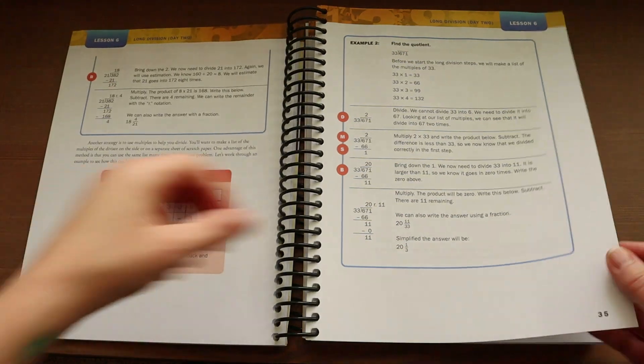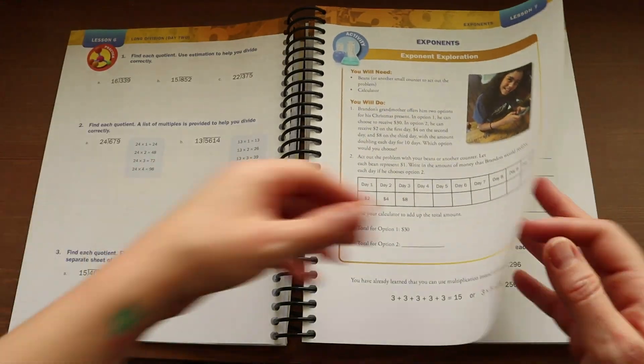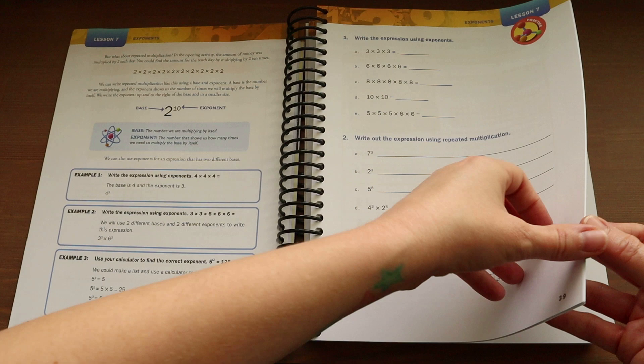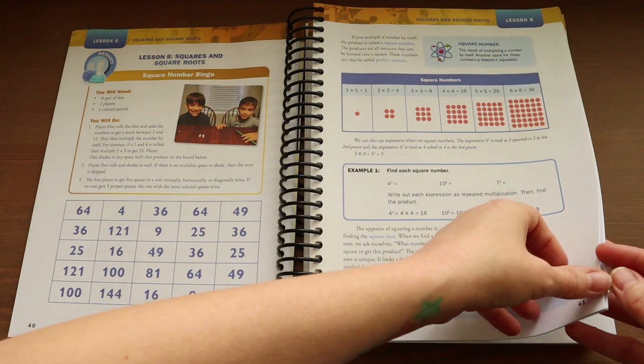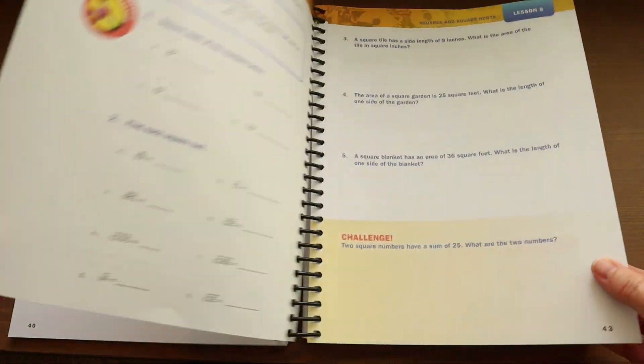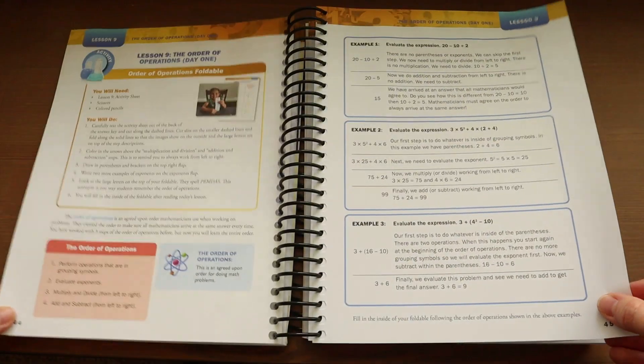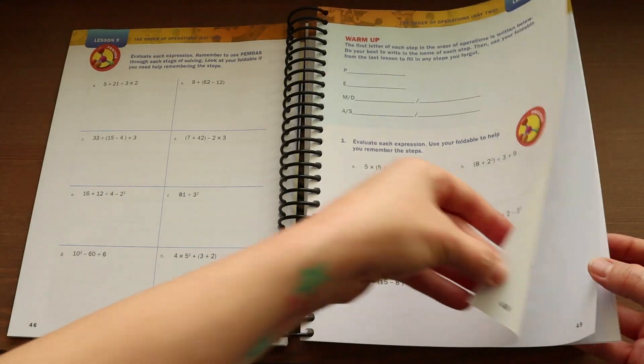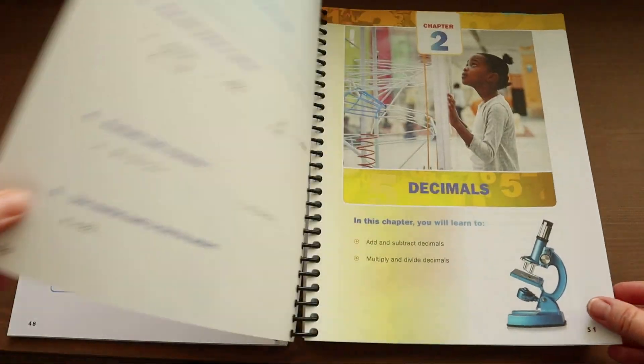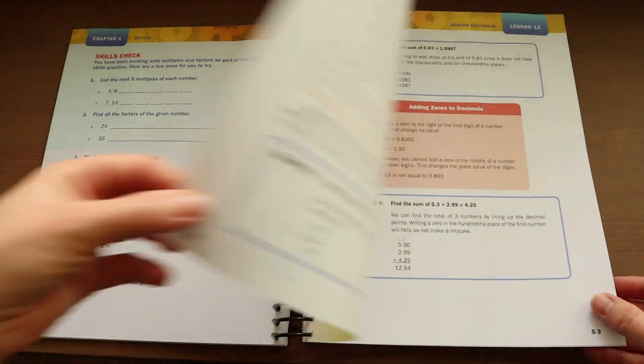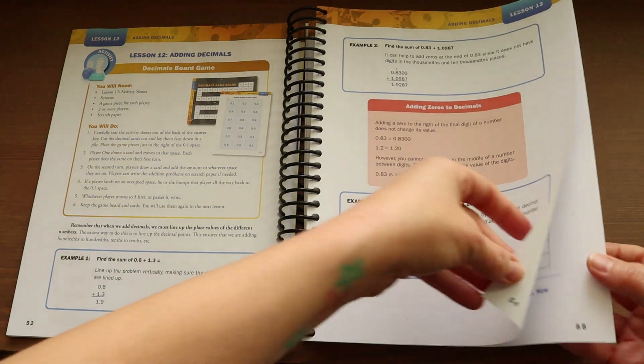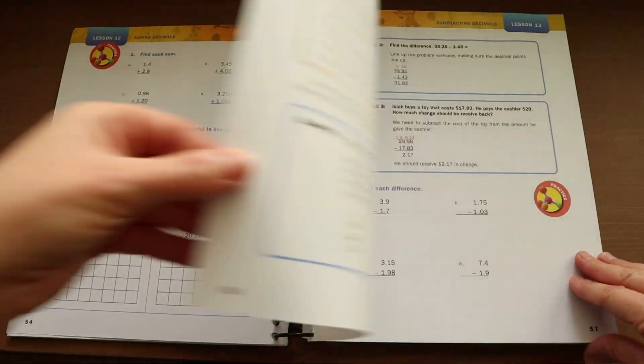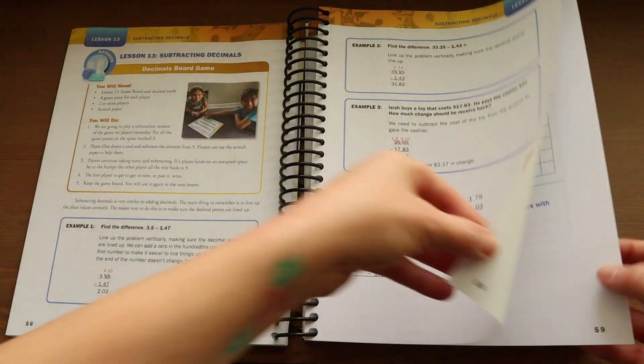Now this is a curriculum written from a biblical worldview, so there will be occasional scripture throughout the book as well as mentions of the Bible and God. And like I said, at the beginning of every unit, there is a science connection as well as a God connection. So how is God working in our lives through math and the upcoming lessons that your child is going to learn?